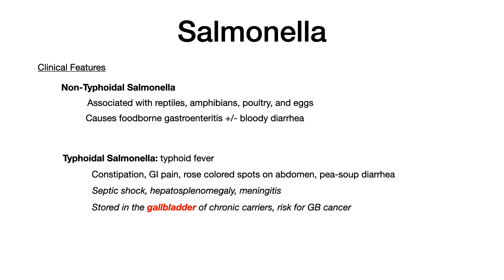Typhoidal salmonella causes typhoid fever. You see early constipation and non-specific GI symptoms. What's really key are rose-colored spots on the abdomen — a very specific finding. You may also see what's known as pea soup diarrhea, though that buzzword has fallen out of favor. Know the spectrum: constipation, pain, rose-colored spots on the abdomen, and diarrhea.